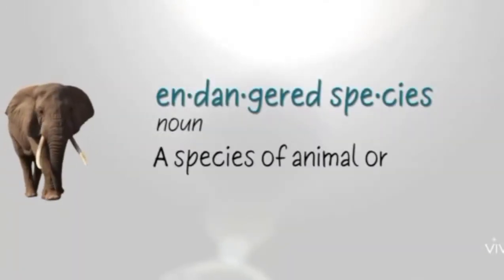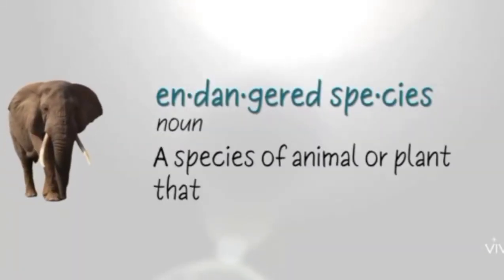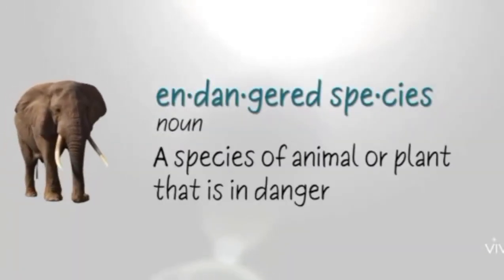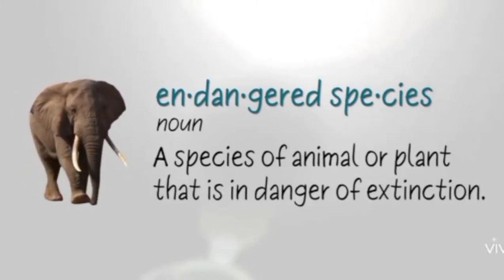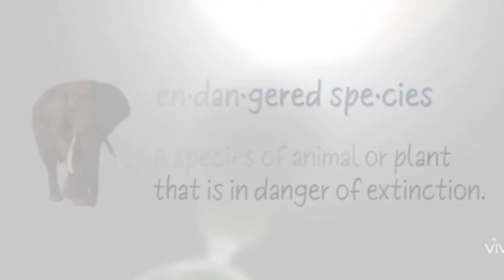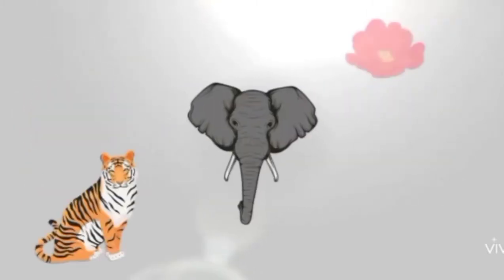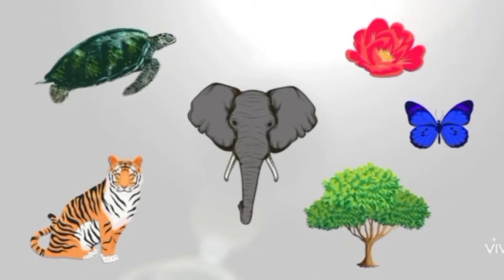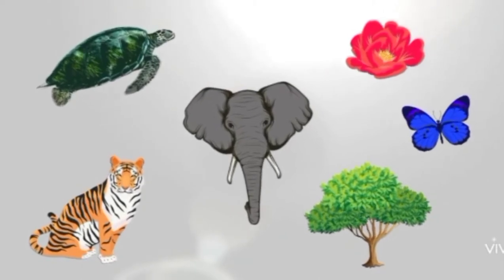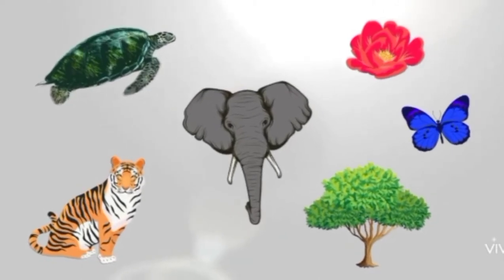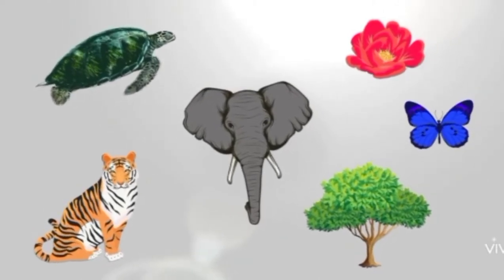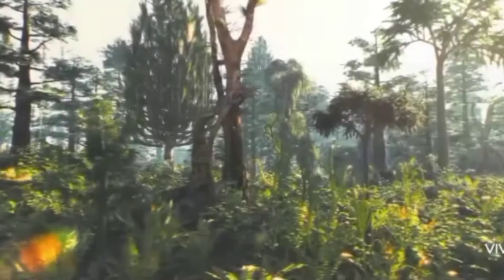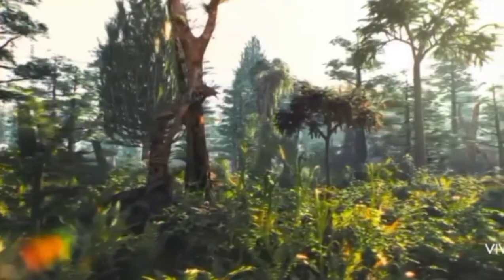Now the question arises: what are endangered species? Endangered species is a species of animals or plants that is in danger of becoming extinct. Animals whose numbers are rapidly decreasing in the world are called rare or endangered animals.